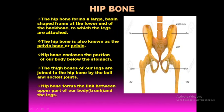The hip bone has two socket joints on the two sides of its lower part. The thigh bones of our legs are joined to the hip bone by a ball and socket joint. When we discuss joints, you will learn more about this type. The hip bone is the linking bone between the upper part of the body and the legs.